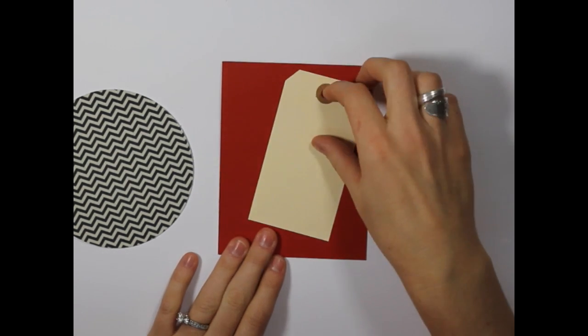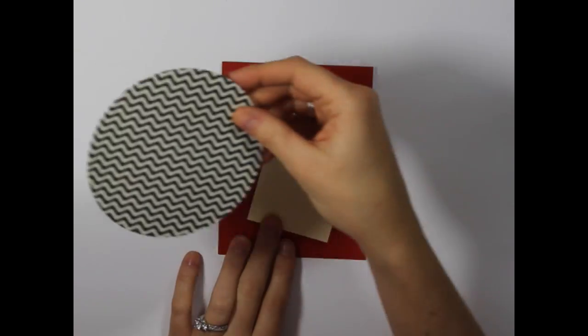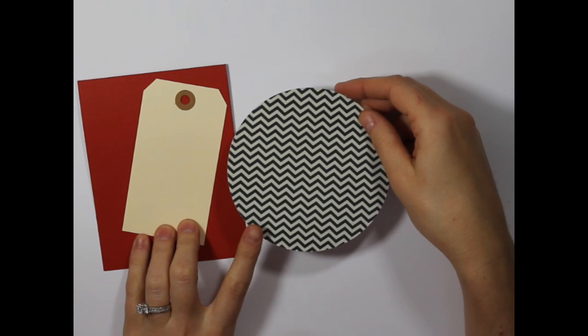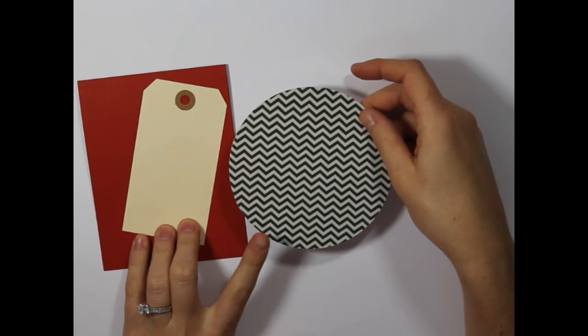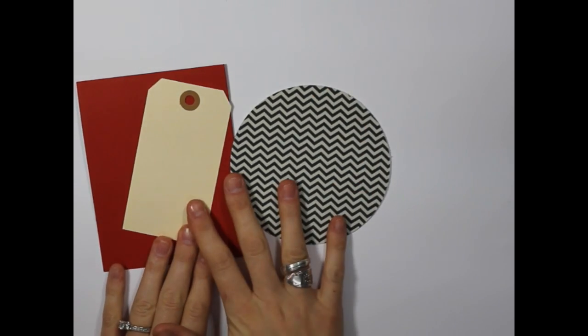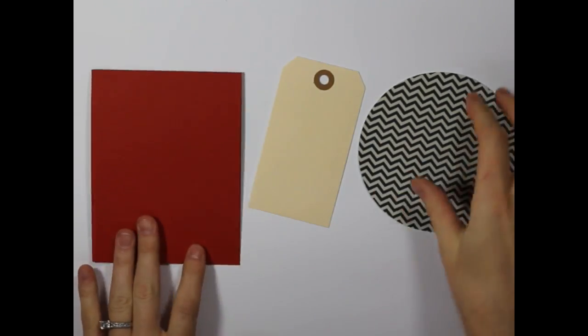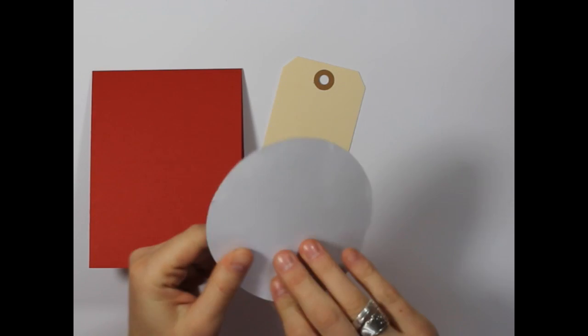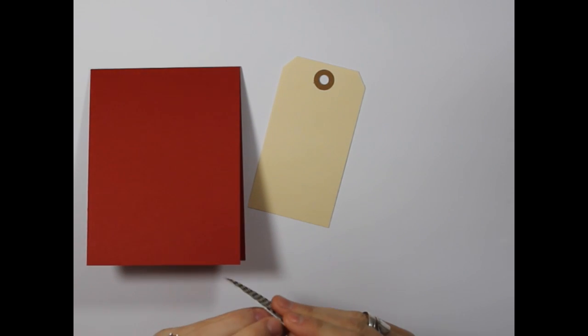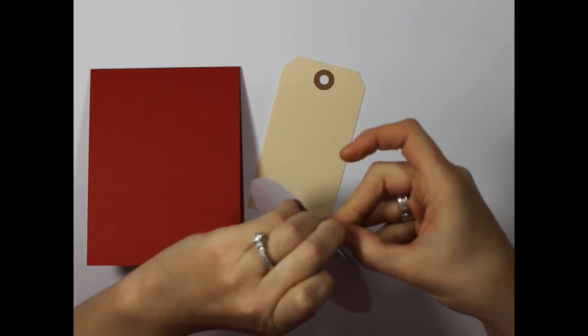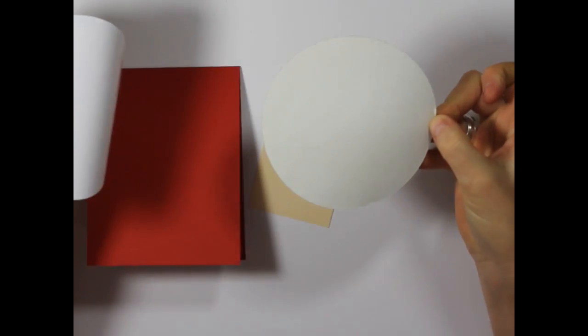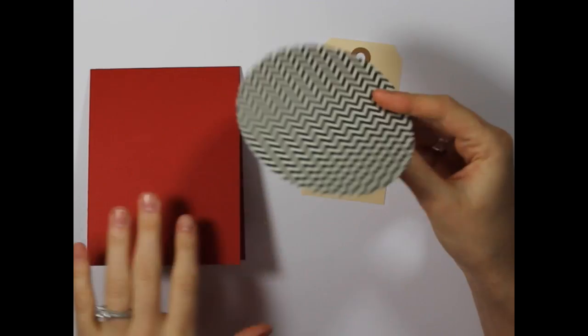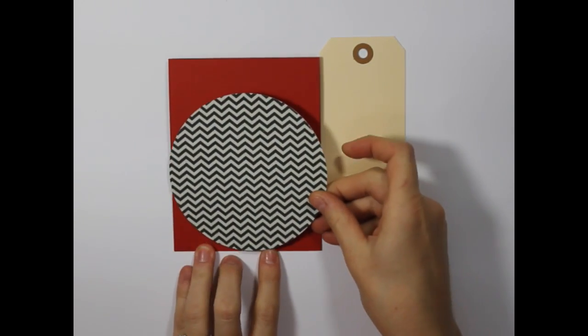Then I also have a standard parcel tag, and then I cut a circle from Amy Tangerine by American Crafts fabric paper in a chevron pattern. So we've got some basic elements here, and we're first going to adhere our large fabric circle. The cool thing about this fabric paper is that it has a backing. You can peel that backing right off and it has adhesive already on the back. So I'm just going to place that on our card.